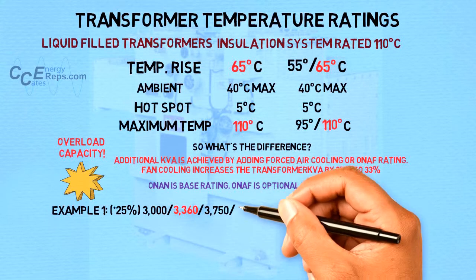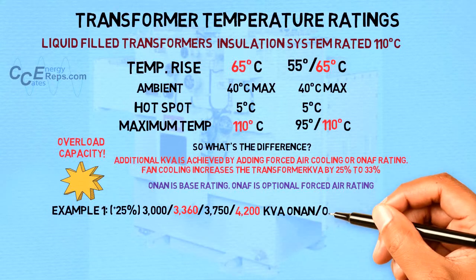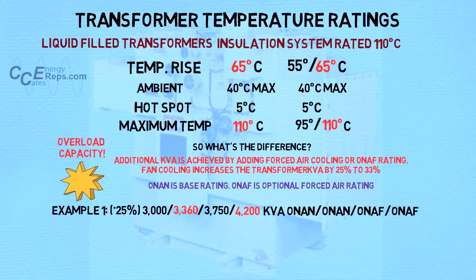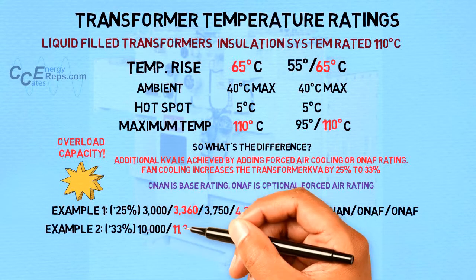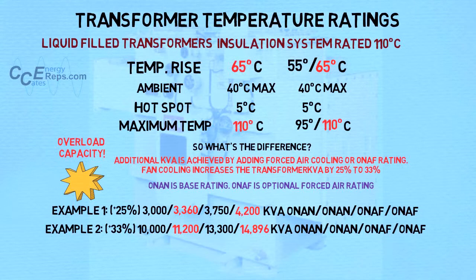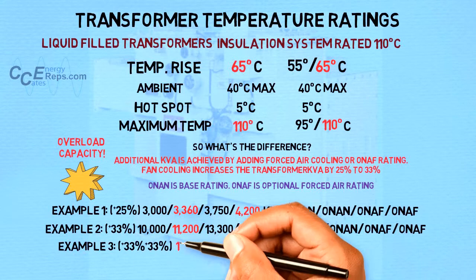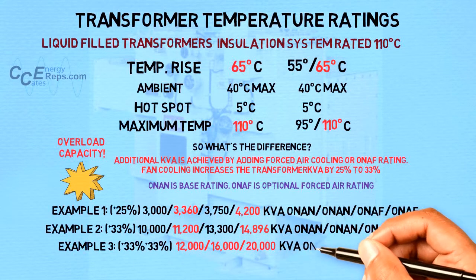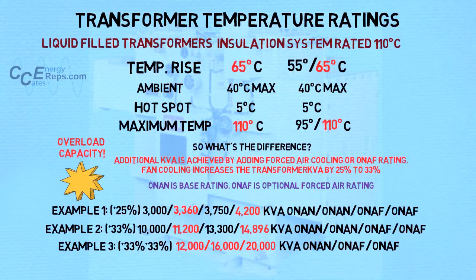Example one shows the ratings of a 3,000 KVA 55-65°C rise transformer with fan cooling. Example two shows the ratings of a 1,000 KVA 55-65°C rise transformer with fan cooling. Example three shows the ratings of a 12,000 KVA 65 degrees C rise transformer with two stages of fan cooling. A derating strategy may also be a good approach for dealing with a combination of load and ambient temperature issues.